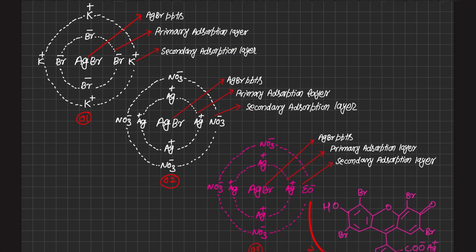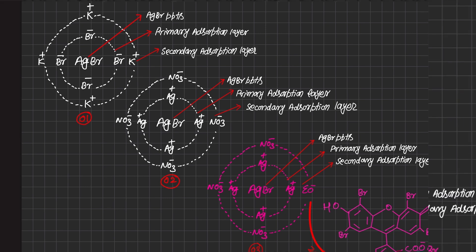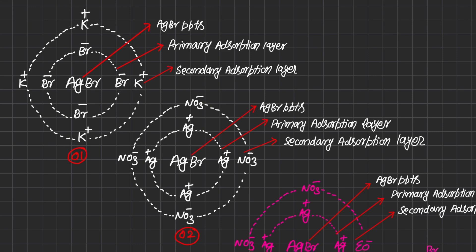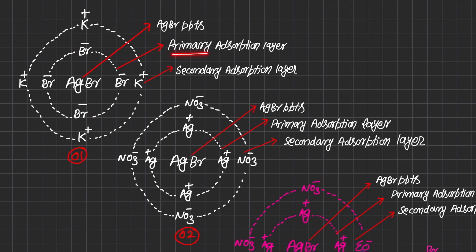This slide describes the whole chemistry behind the adsorption indicator method. Layers are formed around the precipitates. In the first stage, when only certain drops of silver nitrate have been added, silver nitrate reacts with KBr to form silver bromide precipitates in the center. The first layer around the silver bromide precipitate is of bromide ions — called the primary adsorption layer — whereas the second layer is of potassium ions, called the secondary adsorption layer.